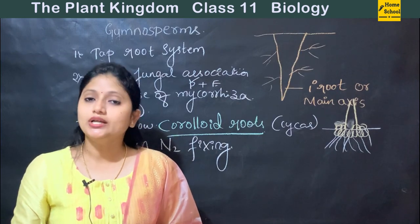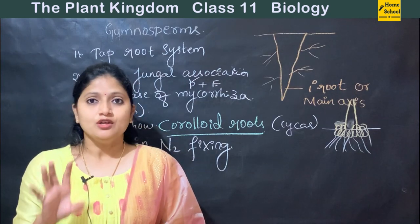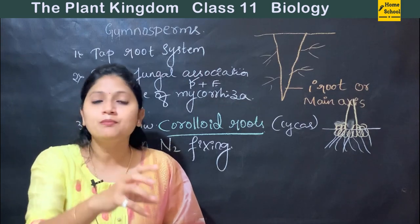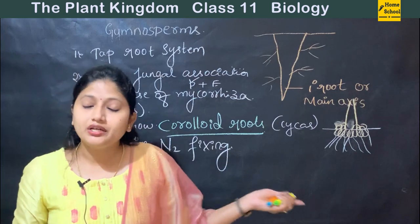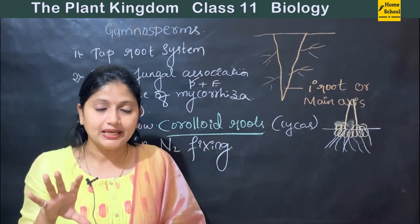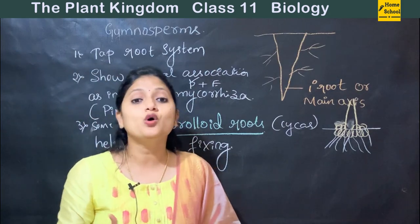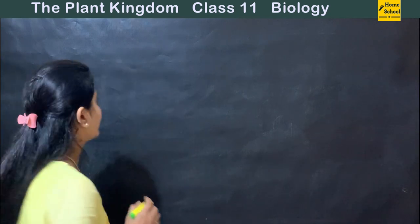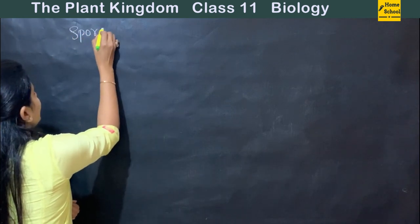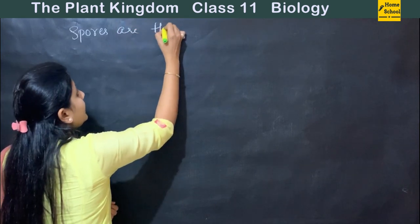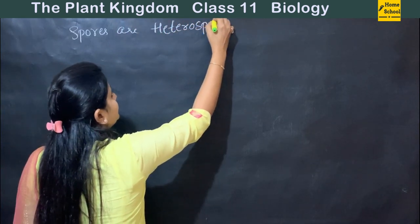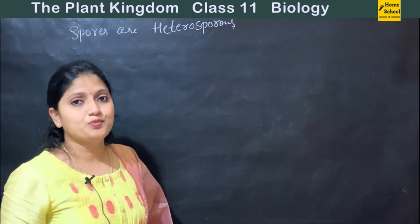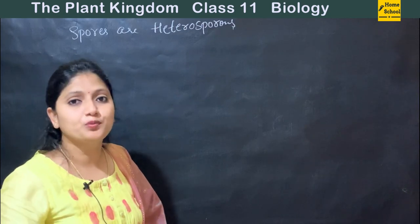Root, stem, and leaves are all part of the sporophyte, which is the main plant body in gymnosperms. Moving on to spores — gymnosperms form mainly heterospores, meaning two different types of spores. Homospores means the same kind of spores are formed, whereas heterospores means two different types of spores are formed.